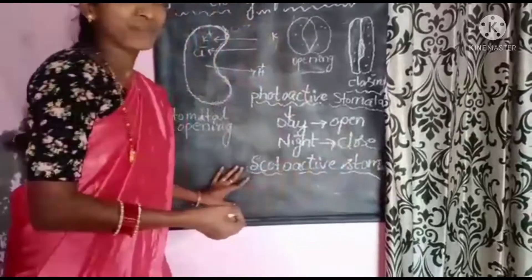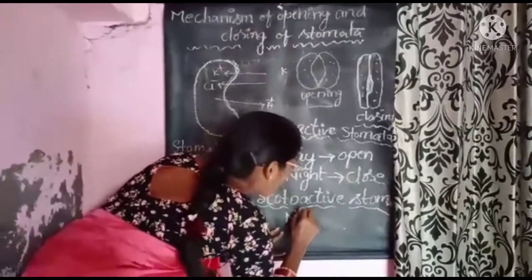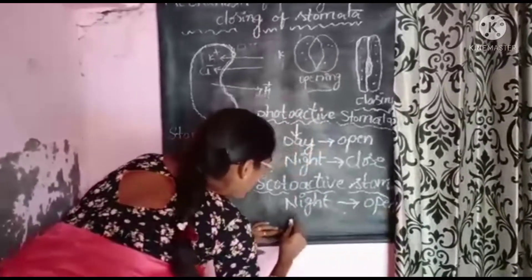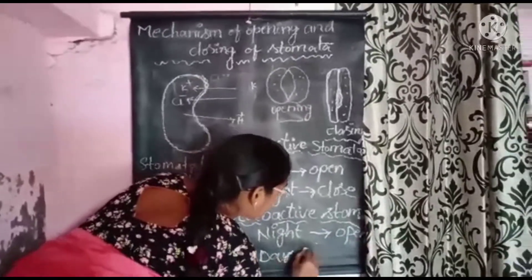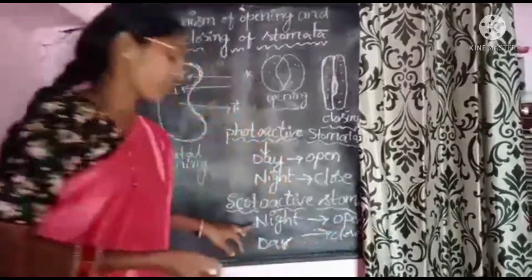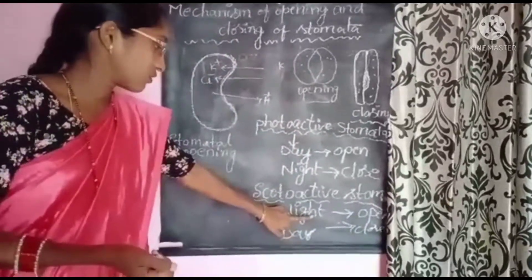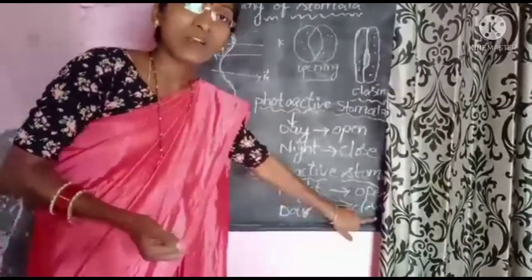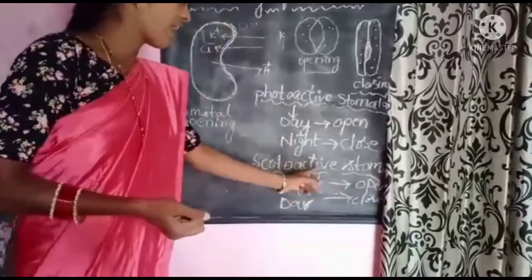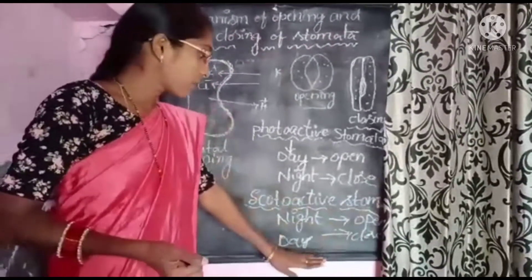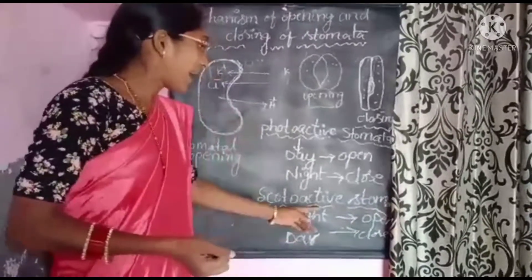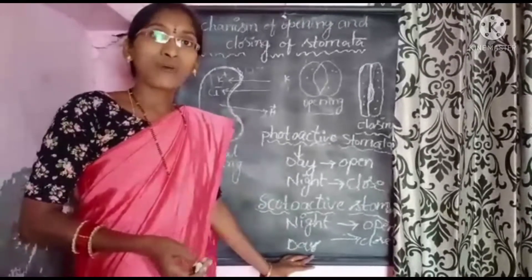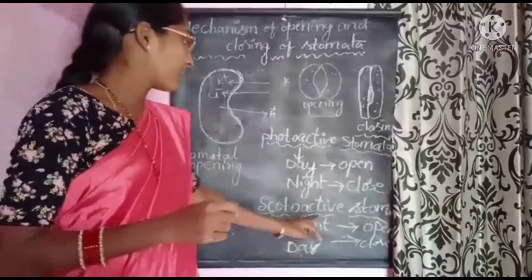There is also a type called scotoactive stomata. During night time, the stomata open, and during day time, the stomata close. This is known as scotoactive stomata. An example of scotoactive stomata is succulent plants — their stomata open at night and close during the day.